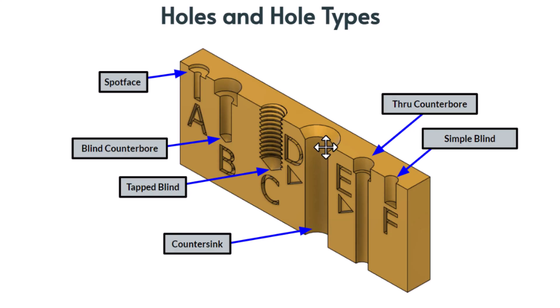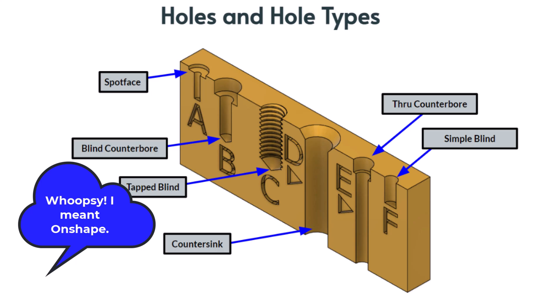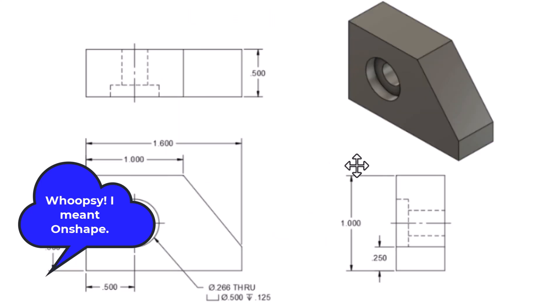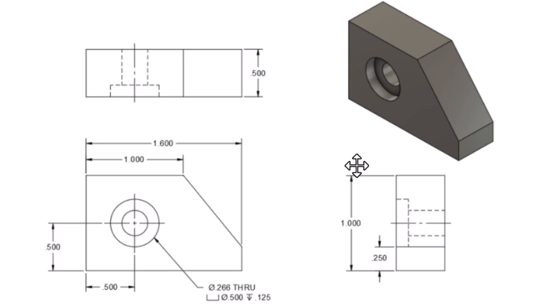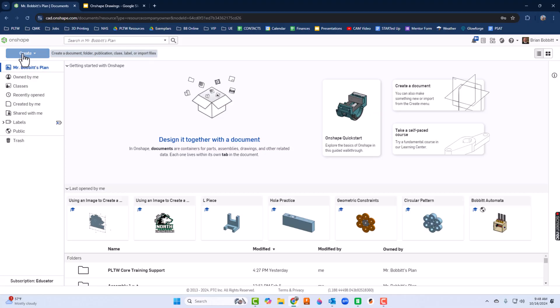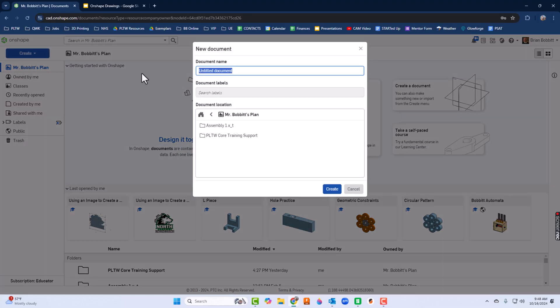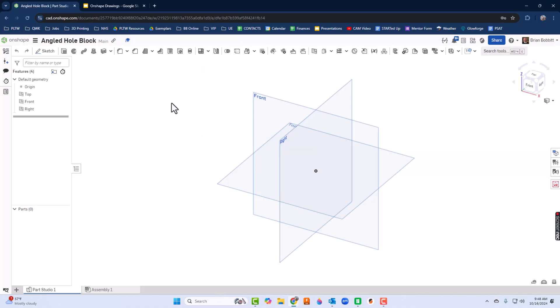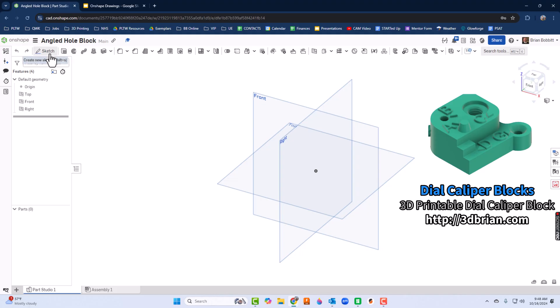Now let's talk about how we can actually put those holes in. We're going to spend some time working on this particular file. It's a pretty simple piece other than the counterbore hole, which is a slightly different thing. In OnShape, I'm going to create a document and call it 'angled hole block.'